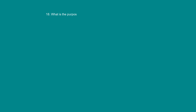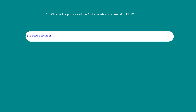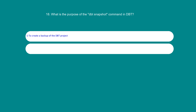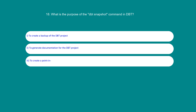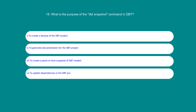What is the purpose of the dbt snapshot command in dbt? Option 1: To create a backup of the dbt project. Option 2: To generate documentation for the dbt project. Option 3: To create a point in time snapshot of dbt models. Option 4: To update dependencies in the dbt project. The answer is 1: To create a backup of the dbt project.